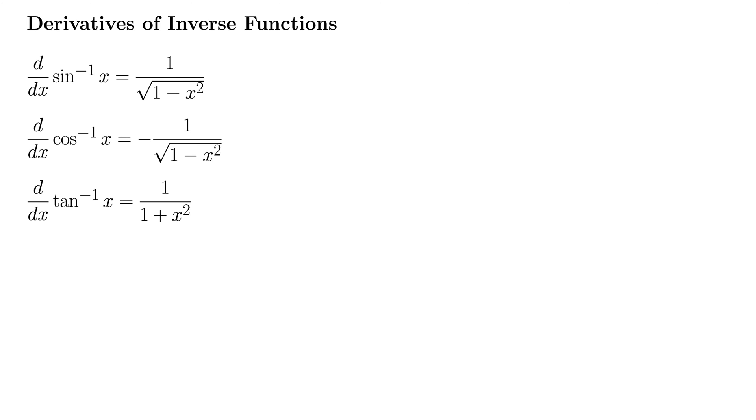We have the derivative of arcsine, or sine inverse of x, is one over the square root of one minus x squared. The derivative of arccosine of x, or inverse cosine of x, is negative one over the square root of one minus x squared. And the derivative of arctan of x, or tan inverse of x, is one over the quantity one plus x squared.